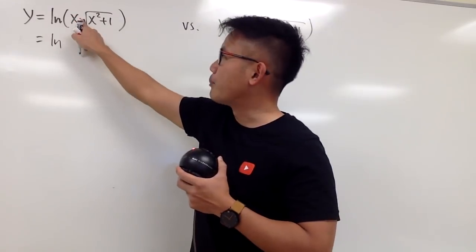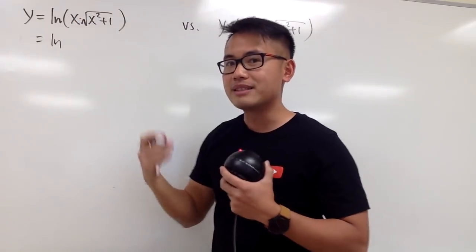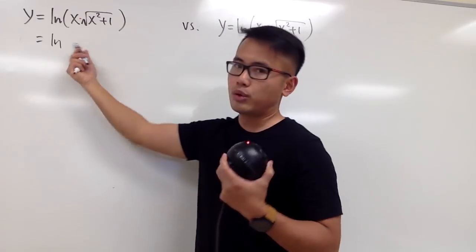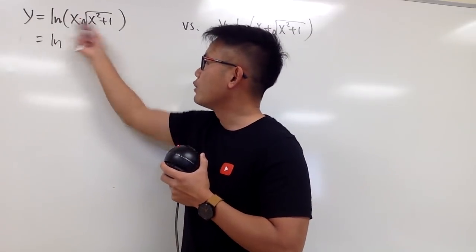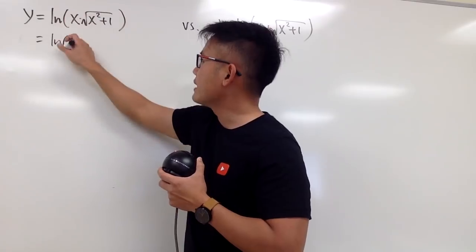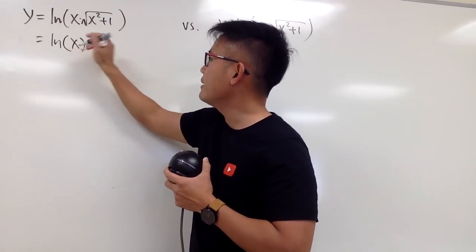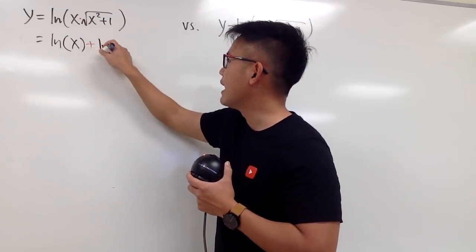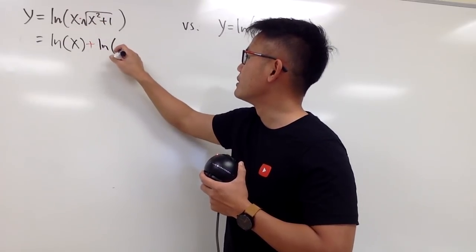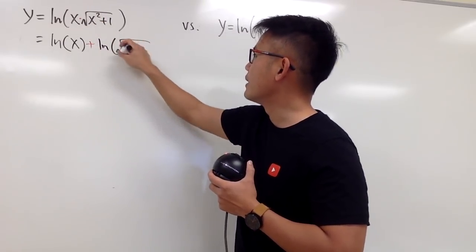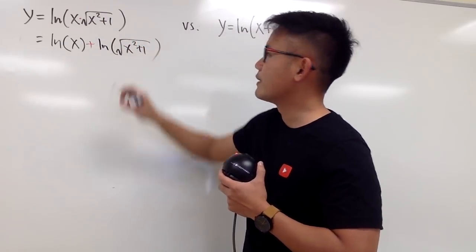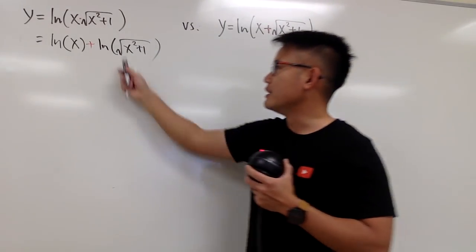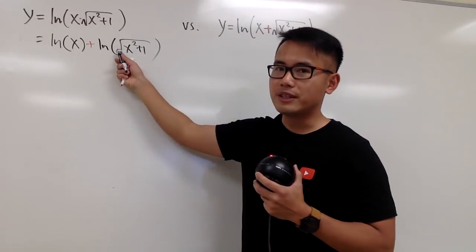When we have a product inside the ln, it's the same as the sum of two logs. So we can write this down as ln of x, and then we add it with ln of the square root of x squared plus 1. And the truth is that we can even simplify this more, especially for the square root.